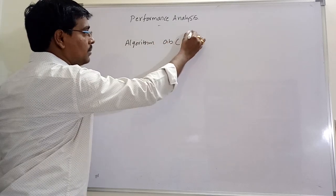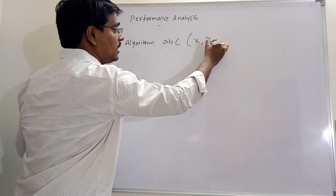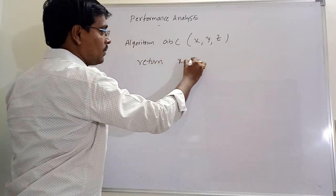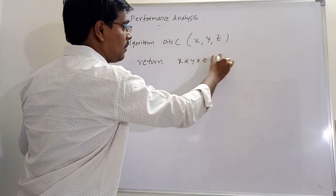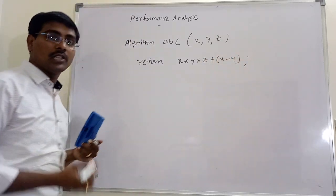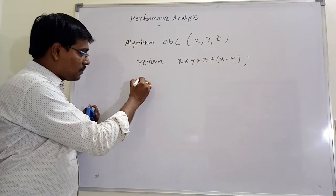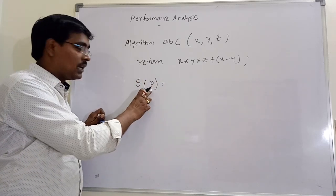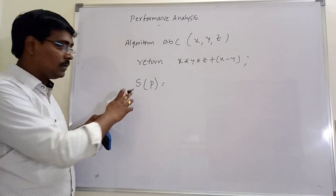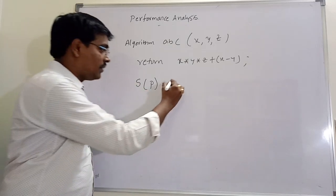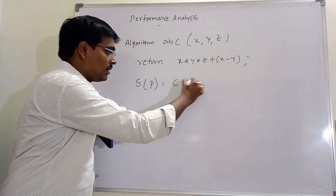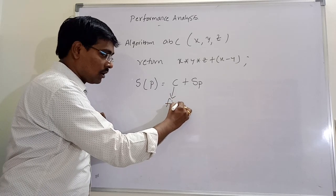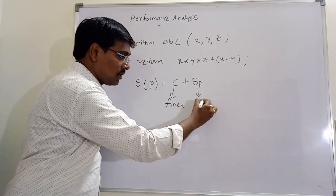Consider an example: suppose the name of the algorithm is ABC, and it contains three parameters x, y, z. Suppose a single statement is written: some expression like x * y * z + x - y. Space complexity of program P is represented as S(P) = C + S_P, where C represents the fixed part and S_P represents the variable part.